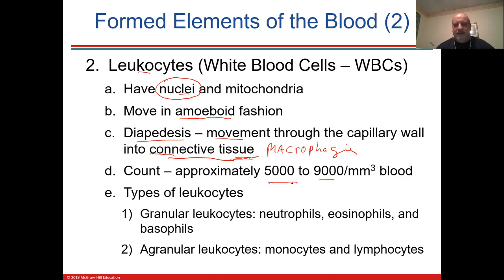If your white blood cell count is around 5,000–6,000 with a cold, that's not so bad. But if it gets around 11,000, you've got a serious infection that needs to be treated — possibly bacterial, requiring antibiotics if you have a fever.